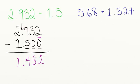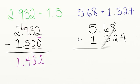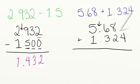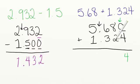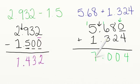Let's try 5 and 68 hundredths plus 1 and 324 thousandths. I arranged the problem and lined up my decimal, which also lines up the rest of the place values. Since 5 and 68 hundredths does not have a value in the thousandths place, I'm going to put a 0 as a placeholder. Starting in the thousandths place: 0 plus 4 equals 4. 8 plus 2 equals 10 — we regroup the 1 into the tenths place. 6 plus 3 equals 9, plus the regrouped 1 equals 10 — regroup the 1 into the wholes. Bring down the decimal. 5 plus 1 equals 6, plus the regrouped 1 equals 7.